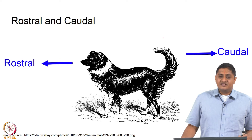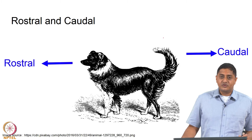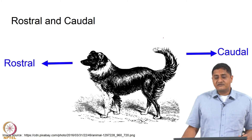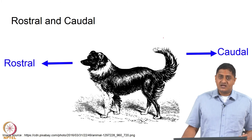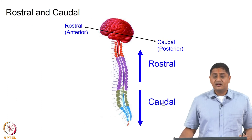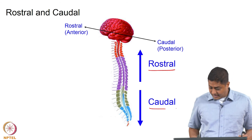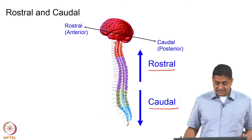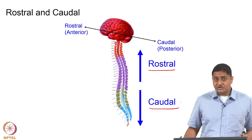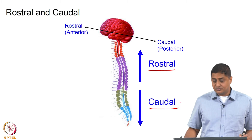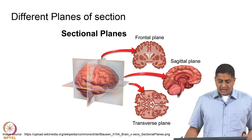Rostral and caudal: in general, rostral refers to that part of the body closer to the tip of the nose, whereas caudal refers to those parts closer to the tail. This is the convention in quadrupeds. In humans, in the spinal cord, rostral refers to superior regions and caudal refers to inferior regions. But in the brain it is different — rostral refers to the anterior regions, whereas caudal refers to the posterior regions.